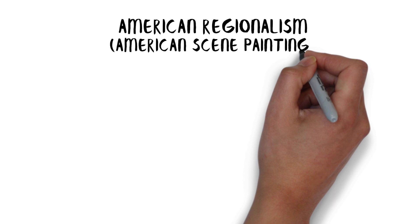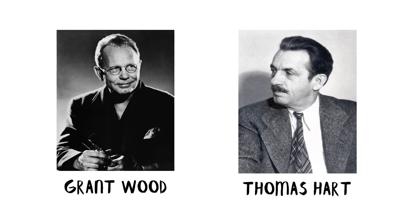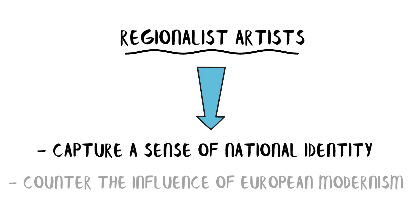American regionalism, also known as American scene painting, emerged during the Great Depression and aimed to depict the everyday lives of ordinary Americans and their connection to specific regions. Artists such as Grant Wood and Thomas Hart Benton celebrated rural and small-town America, often with a nostalgic and romanticized view. Regionalist artists sought to capture a sense of national identity and to counter the influence of European modernism by focusing on distinctly American subjects and landscapes.